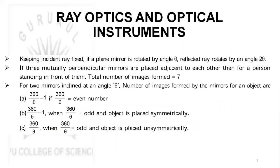Keeping the incident ray fixed, if you rotate a mirror by an angle theta, then the reflected ray is rotated by an angle 2 theta. If there are 3 mutually perpendicular mirrors placed adjacent to each other, the total number of images formed will be 7. For 2 mirrors inclined at angle theta, the number of images formed will be 360/theta minus 1 if 360/theta is even; 360/theta minus 1 if odd and object is placed symmetrically; and 360/theta if odd and object is placed unsymmetrically.